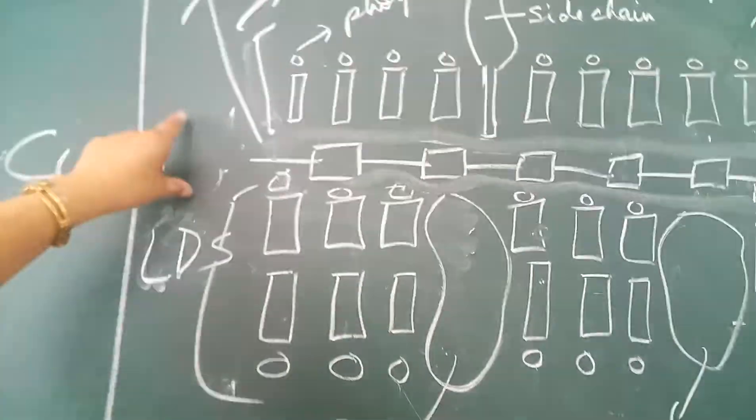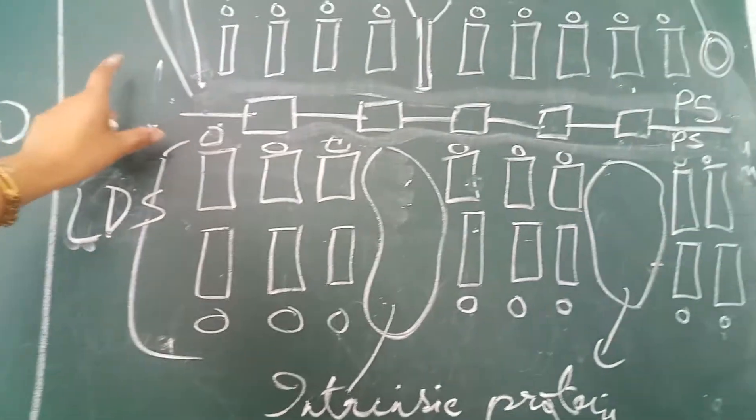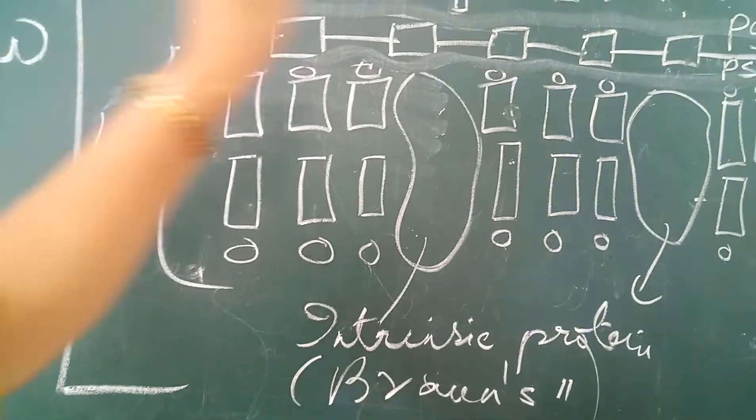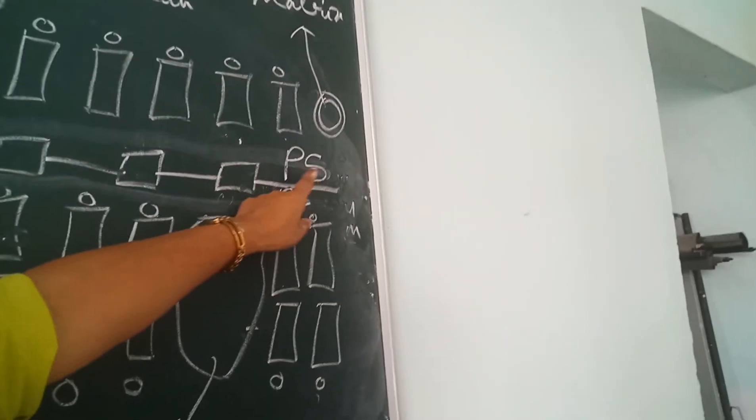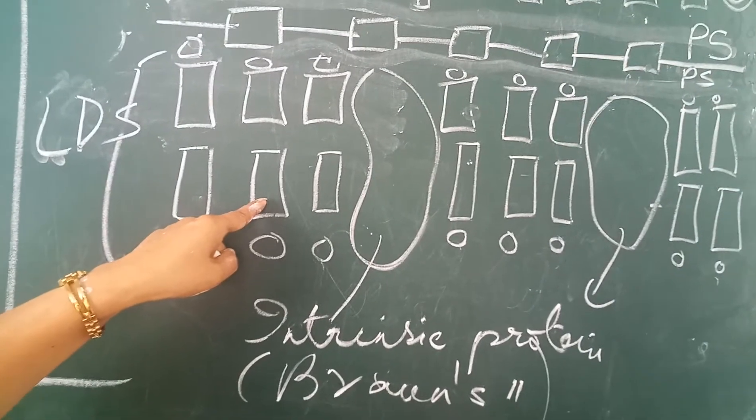So, the cell wall structure in gram-negative bacteria is not so simple. It is highly, highly complex. Because of the presence of the periplasmic space. This is the peptidoglycan. And this is the cell membrane.